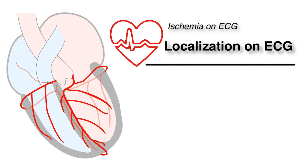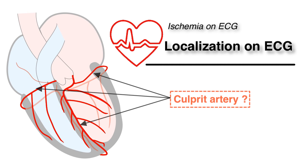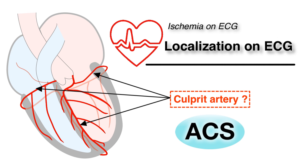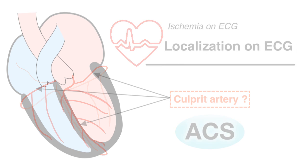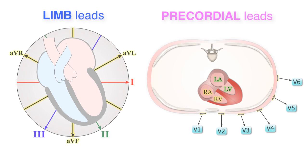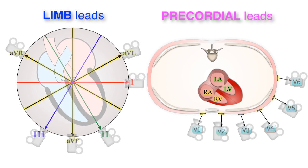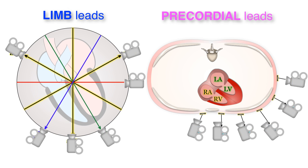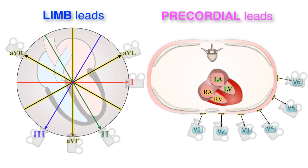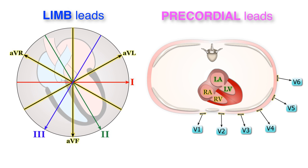A standard 12-lead EKG may help diagnose the culprit artery in the setting of an acute coronary syndrome. Remember, each lead on the EKG is like a video camera looking at a specific point on the surface of the heart. Some of these cameras are next to each other and may therefore record ischemia along an entire territory.